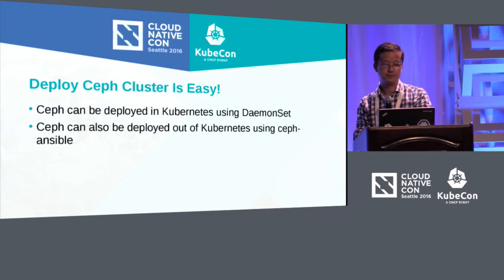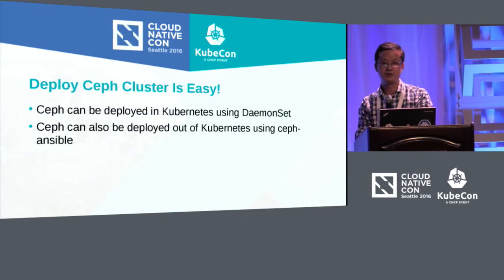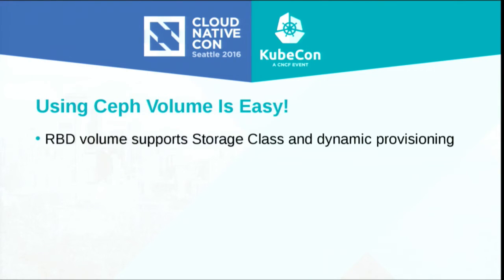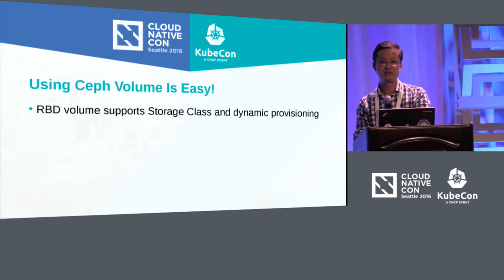We also support Ceph deployments through Ansible, also for Kubernetes environments. You can create a cluster using it, which supports baremetal deployments as well as containerized Ceph using different images. We support both the upstream Ceph daemon images as well as the RHCS-supported images. Once you deploy Ceph and create pods and deployments, you can consume Ceph very easily, thanks to great progress on the cluster storage provisioner and dynamic provisioning.